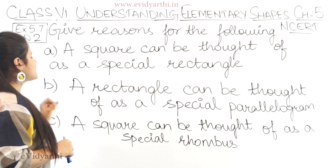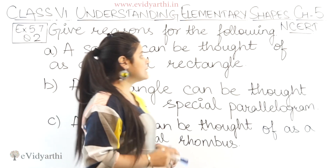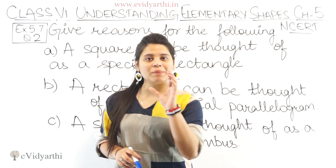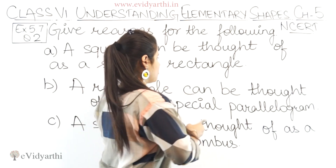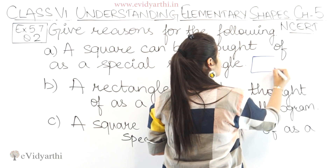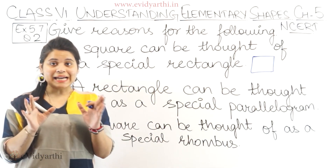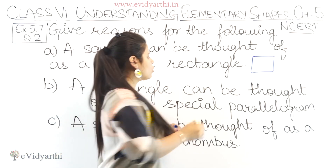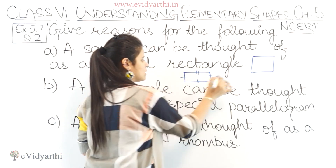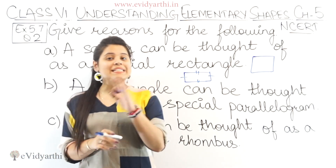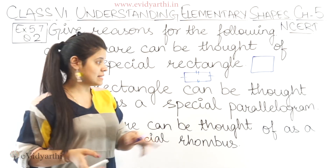The first one is: a square can be thought of as a special rectangle. This means that we can call a square a rectangle. When we talk about a square, all 4 sides of a square are equal. When we talk about a rectangle, the opposite sides of a rectangle are equal. So square's sides are all equal, and rectangle's opposite sides are equal.